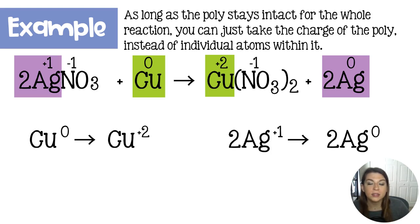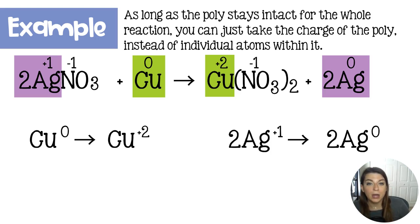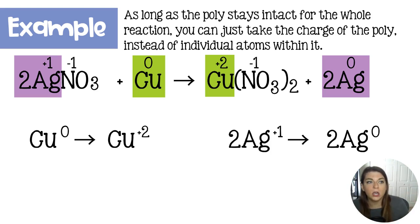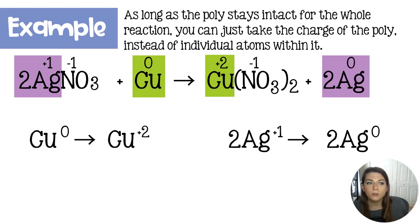Here is another example. This reaction is very common, so I thought it would be a good one to include. We have silver nitrate reacting with copper to form copper nitrate and silver. Here's a tip: as long as your polyatomic ion stays intact for the entire reaction — which doesn't always happen, so that preface is very important — you can just use the charge of the entire polyatomic ion. You don't have to find the charges of the individual atoms within it. Sometimes you'll have a few nitrates and maybe half of them break apart and the other half stay as nitrates, so take a close look at the reaction first. In this case, the nitrate stays together the whole time, so I'm just working with that minus one charge.